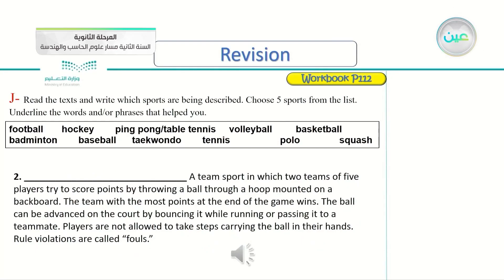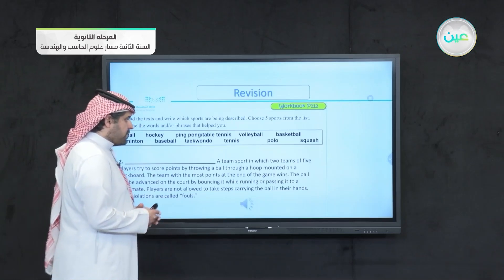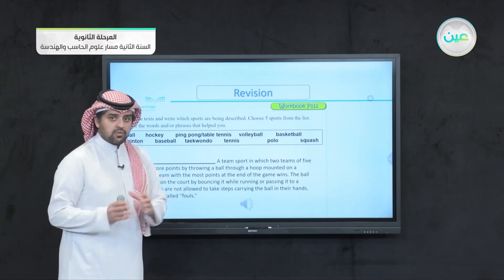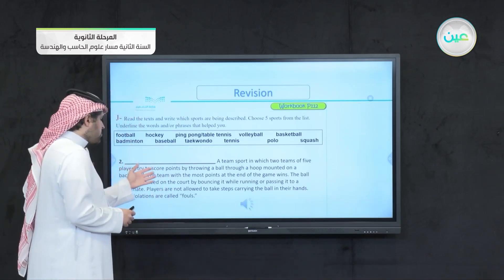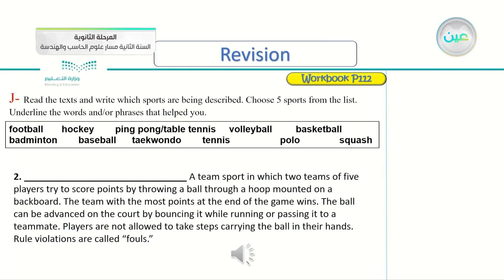Number two. A team sport in which two teams of five players try to score points by throwing a ball through a hoop mounted on a backboard. The team with the most points at the end of the game wins. The ball can be advanced on the court by bouncing it while running or passing it to a teammate. Players are not allowed to take steps carrying the ball in their hands. Rule violations are called fouls. So here it says a team sport with teams of five players — they score points, not goals, by throwing a ball through a hoop.